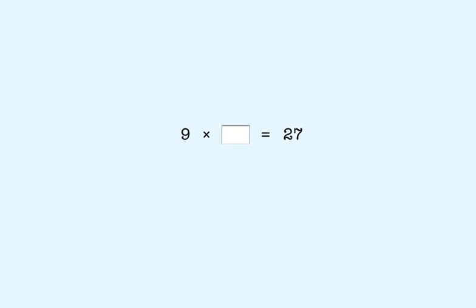9 times what number is 27? We know that the digit in the tens place of the product is 1 less than the missing factor that goes here. So the missing factor is 3. So 9 times 3 is 27.